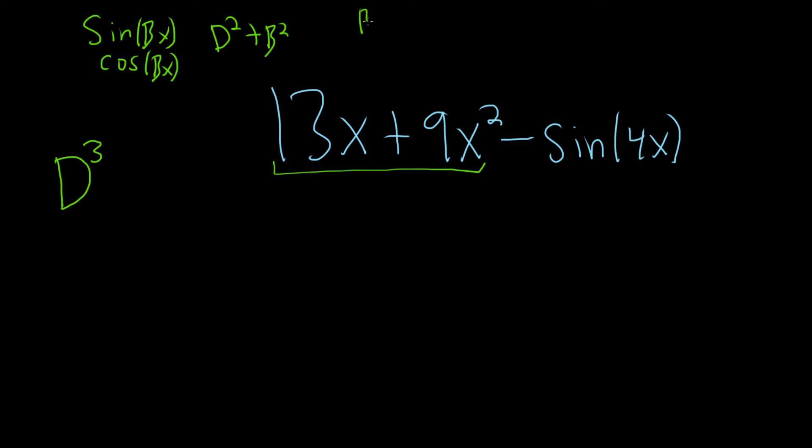So in this case, beta is 4. So we would need d squared plus 16.